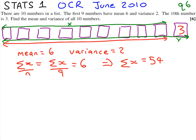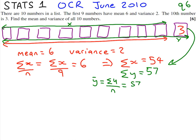That means we can add on our extra number, the 3, and get the sum of all 10 numbers to be 57. Then if we want the mean of y, y-bar, we do the sum of y over n. The sum of y is 57 and n is now 10, because we've got 10 numbers in total, so our mean is 5.7.